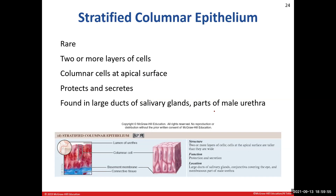Stratified columnar epithelium is another rare type of columnar epithelium. It also offers protection and secretion, so it's going to be affiliated with some ducts — specifically the large ducts of some salivary glands — and parts of the male urethra. The male urethra has several different regions with different types of epithelium, and you'll talk about that in more detail in Chapter 24.